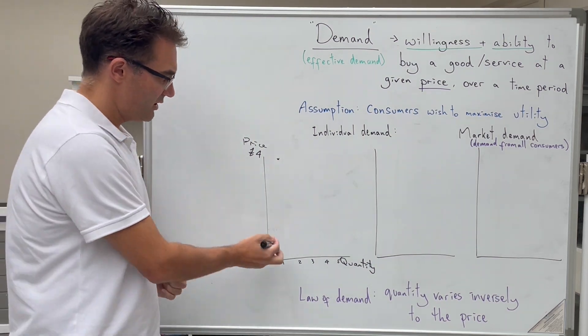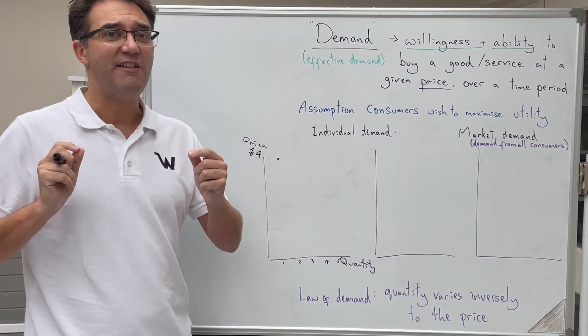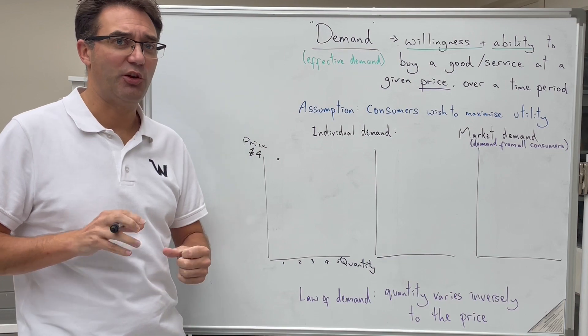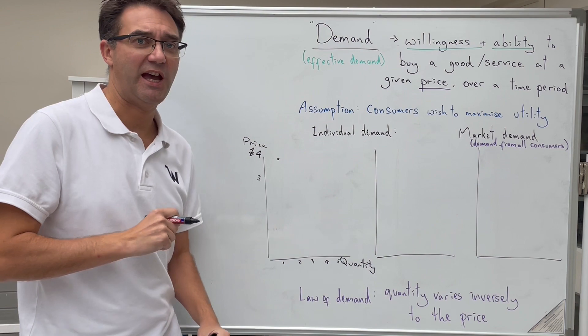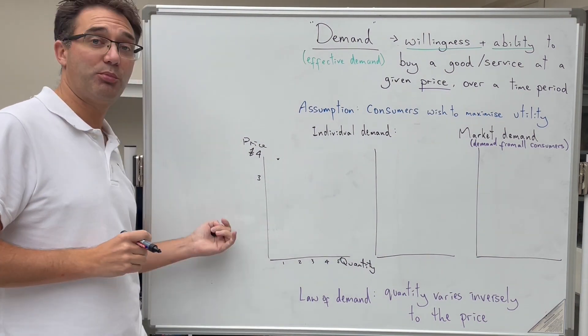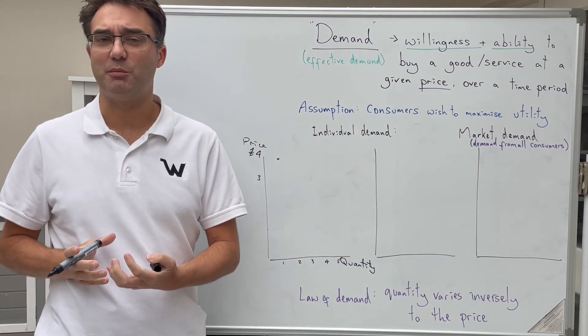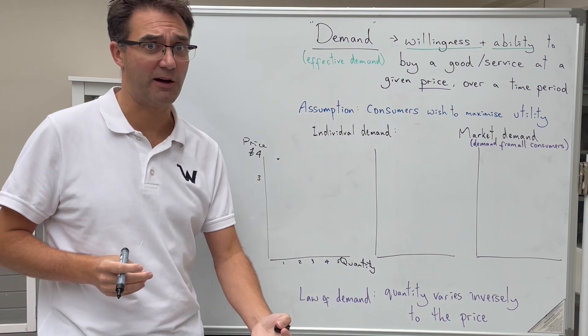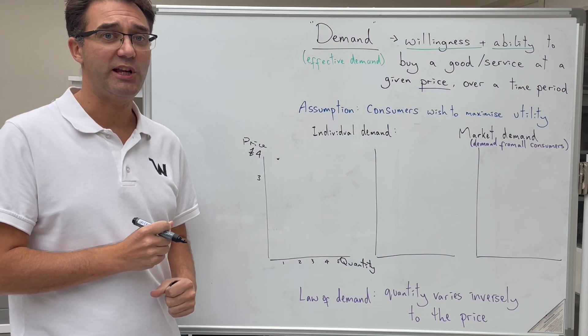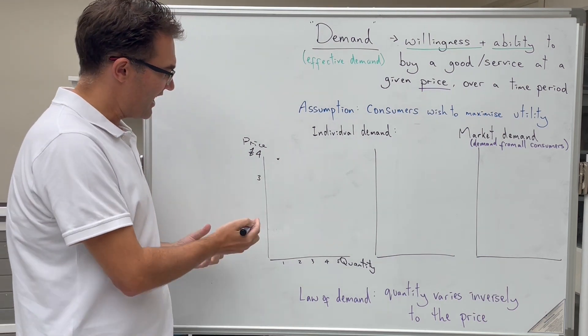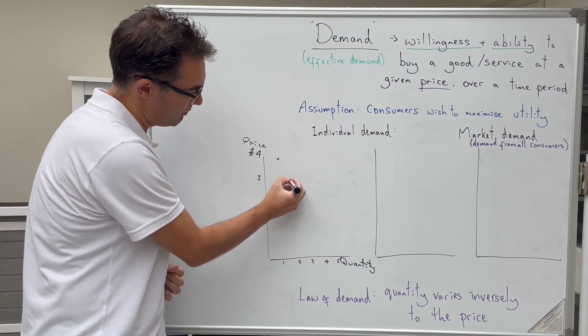However, and this is a really important point with demand, we're looking at our if points here. If the price was only £3 would I buy more sandwiches? Well yeah, the price is lower. I might decide that at £3 a sandwich is better for me than buying a sausage roll or a burger. So it's likely that the amount that I will buy over a week will increase. Let's say that at £3 for a sandwich I'm going to buy two. So we can plot that point there.